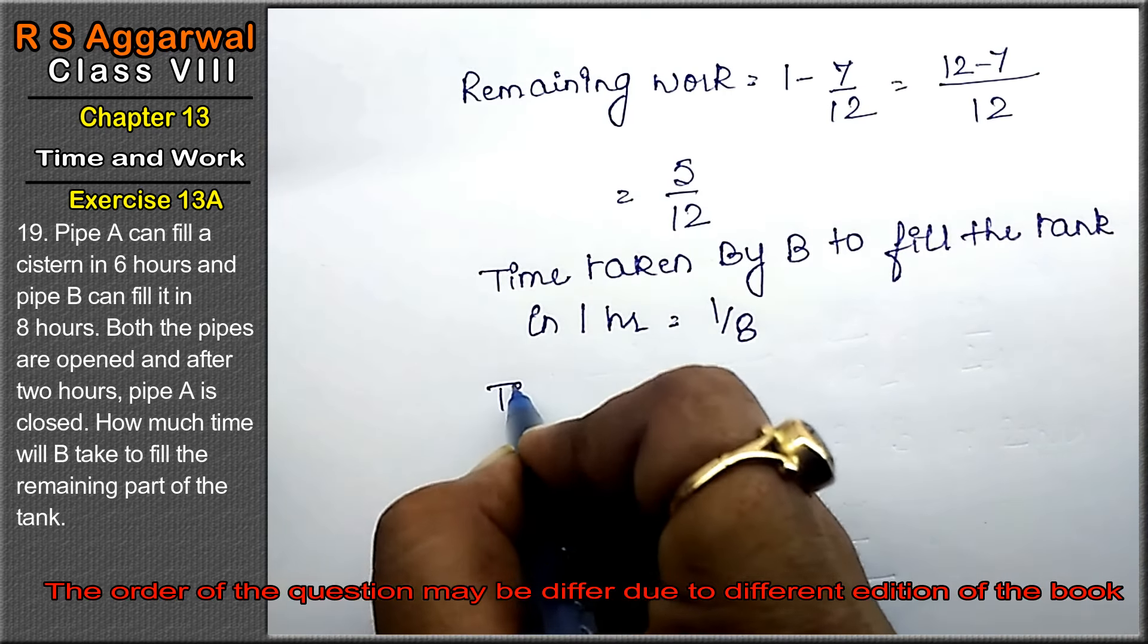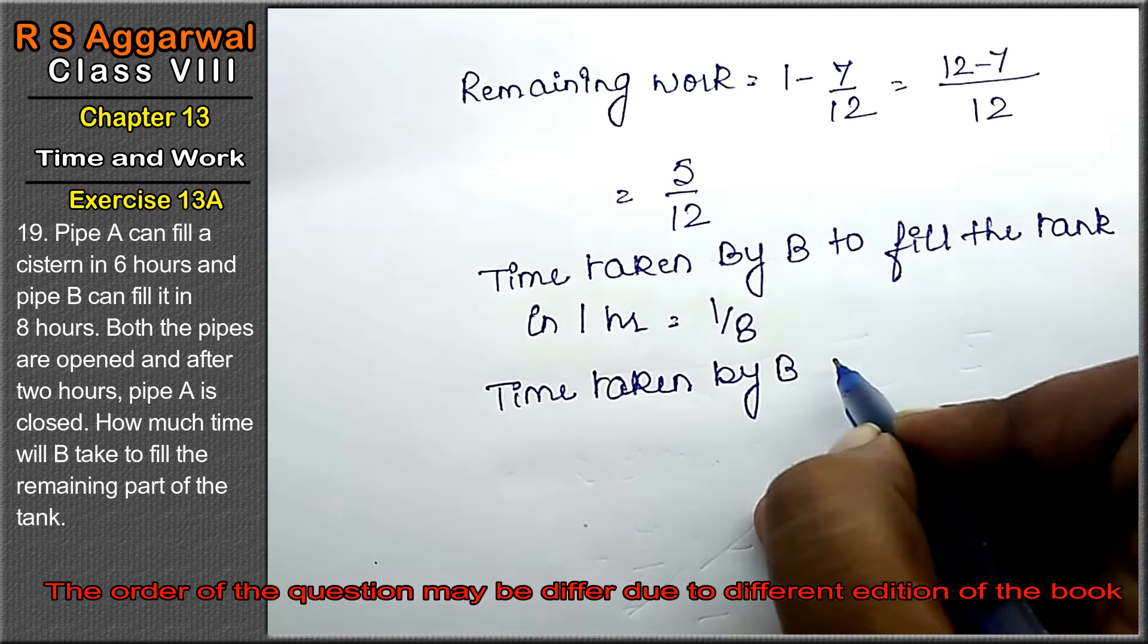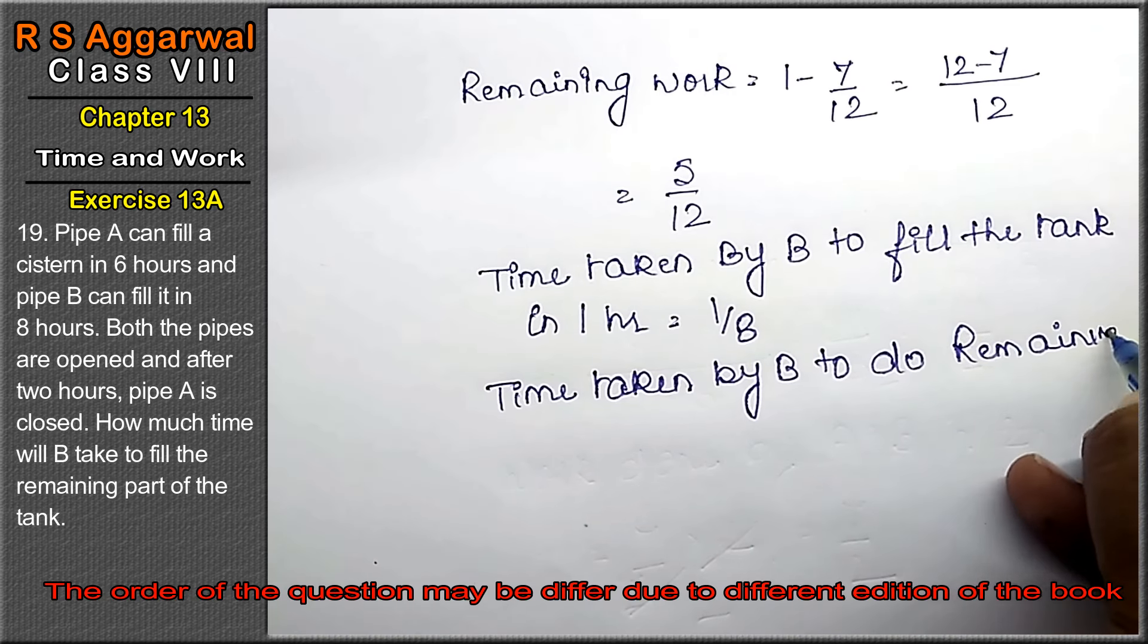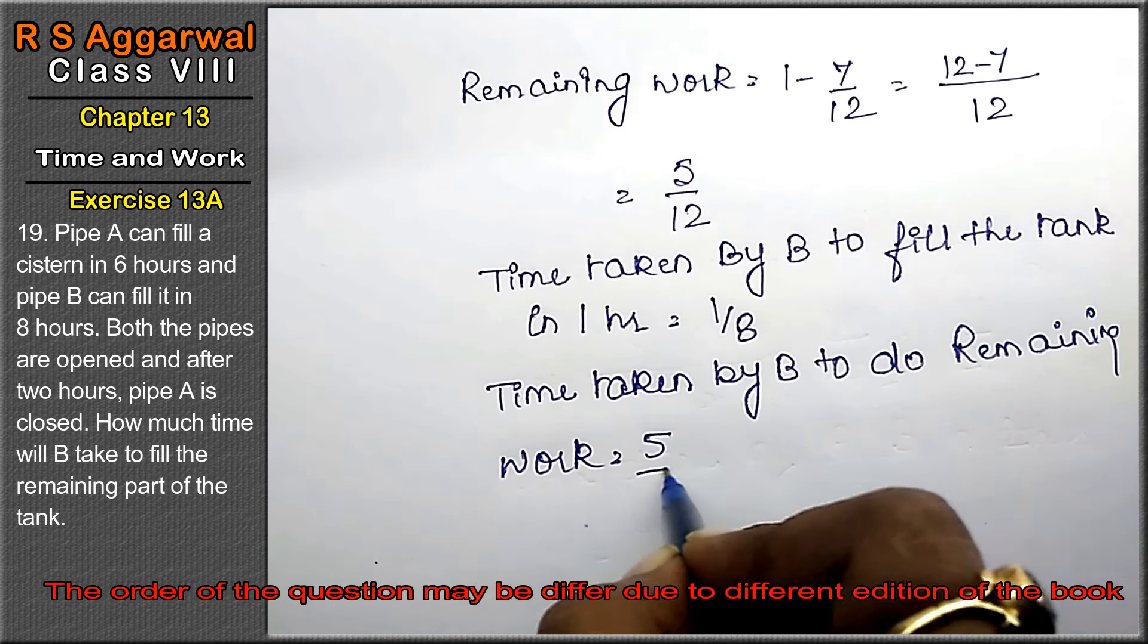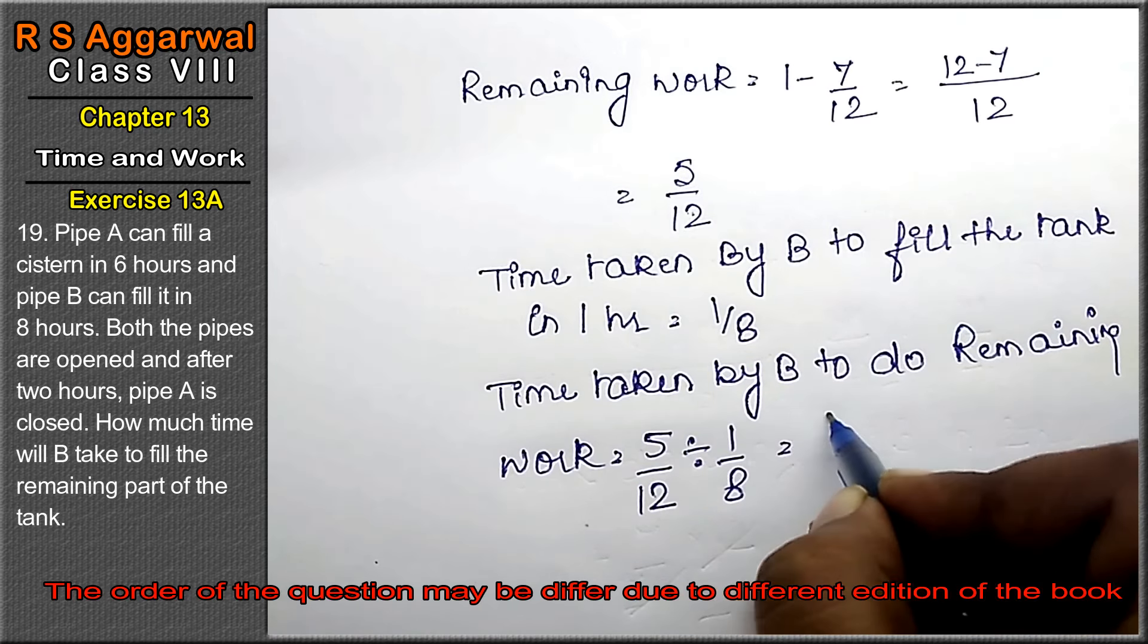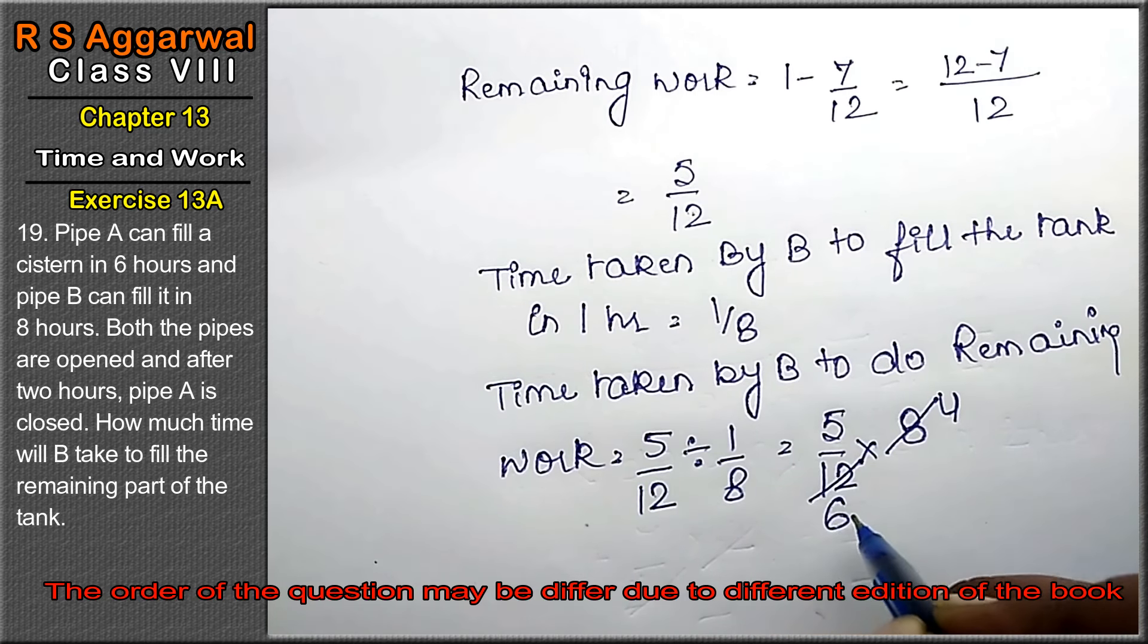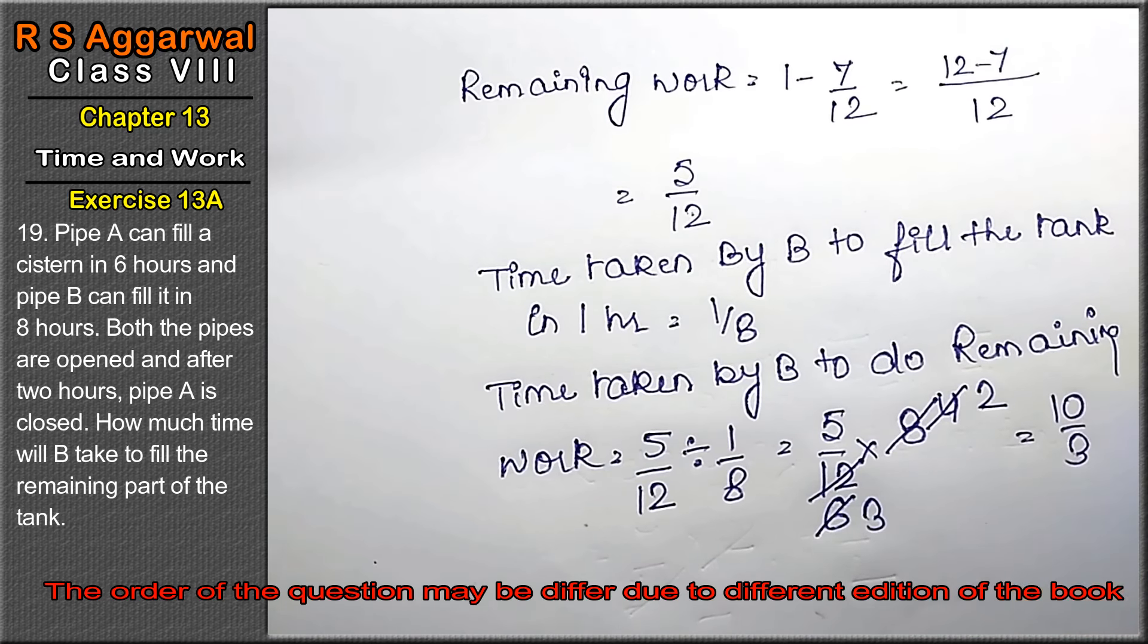Time taken by B to do remaining work equals - how much work was remaining, we'll divide by how much work it can do in 1 hour. So we'll reciprocal this, divide becomes multiply, 8 comes up. 2 fours are 8 and 2 sixes are 12. 2 threes are 6 and 2 twos are 4. So this is 10 upon 3, right friends?